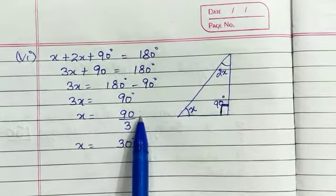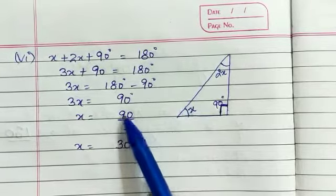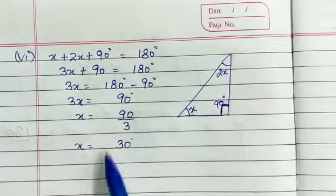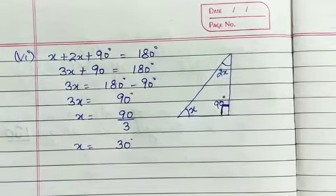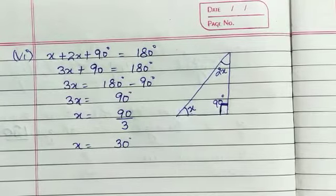After dividing, 3 threes are 9, so X is equal to 30 degrees. Thank you. To be continued.